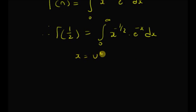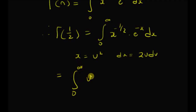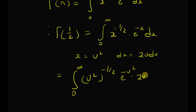Now by using change of variables, that is x = v², which implies dx = 2v dv, and for x = 0, v = 0, and for x = infinity, v is also equal to infinity. So the function becomes the integral from 0 to infinity of (v²)^(-1/2) · e^(-v²) · 2v dv.